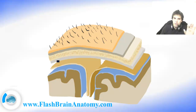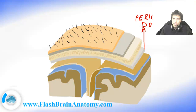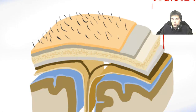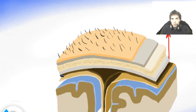Dura mater is not transparent and you cannot see through it, while arachnoid mater and pia mater are transparent. If you remember, I said that the dura mater consists of two layers, and here we have only one. This one layer is the periosteal layer — the periosteal dura mater. The other layer, the meningeal dura mater, is between the periosteal dura mater and arachnoid mater. It's called the meningeal dura mater because it faces the other brain membranes.